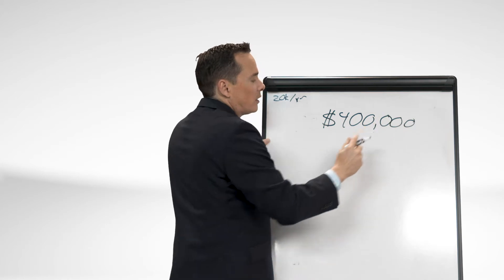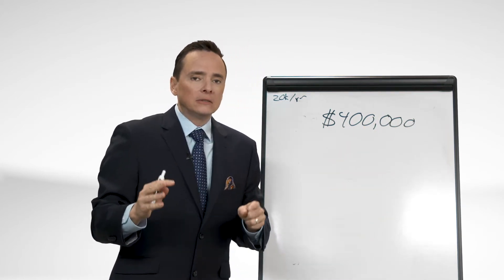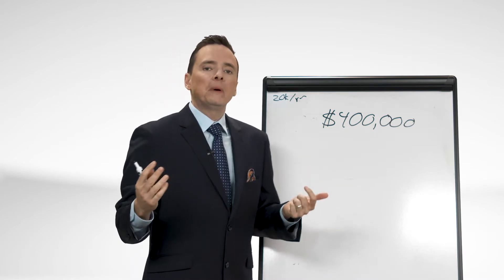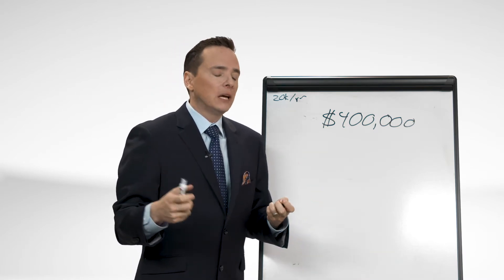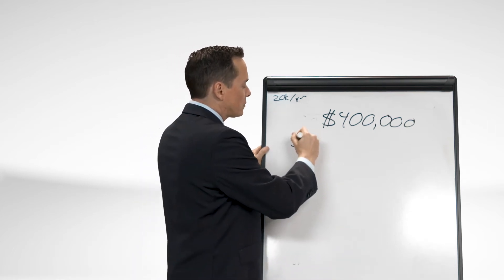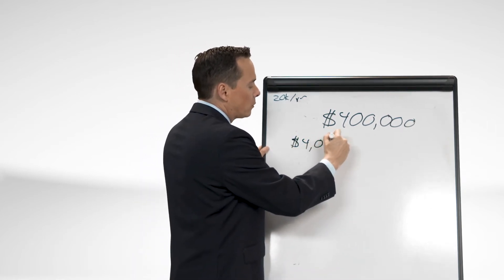And they say, Dave, I'm retiring tomorrow. I am freaked out. I'm like, you don't have to be freaked out. Let's look at this. I say, how much are you spending each month? Let's take a look at a budget. And they say, well, we put a budget together and we're spending about $4,000 a month right now while we're working.